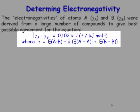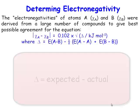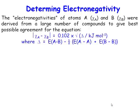Now, what is delta? Delta is the difference between the average bond strength that you'd expect and the bond strength that you actually observe. And if you plug that information into there, you can work out what the modulus of chi A and chi B is. So that just tells you the difference in electronegativity.